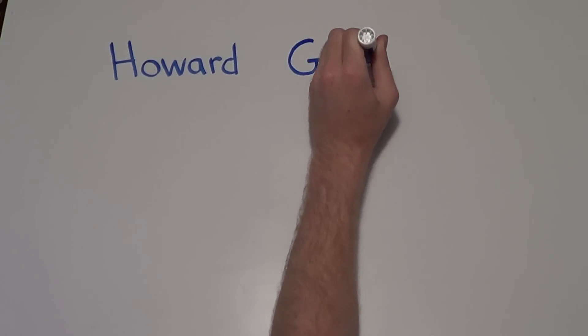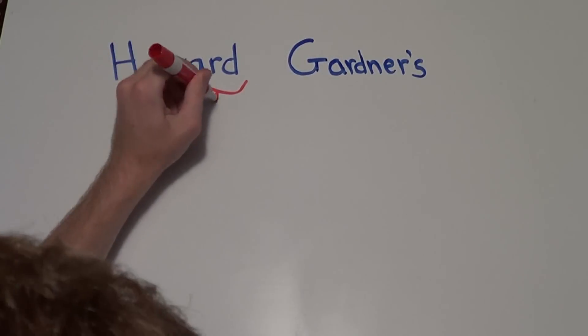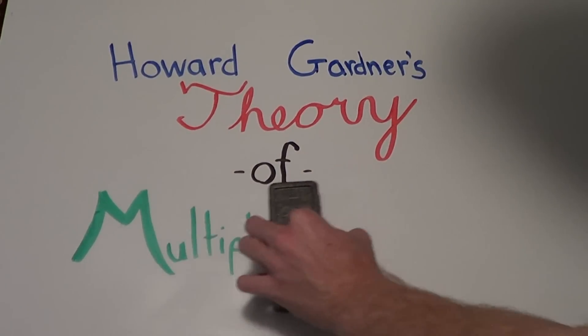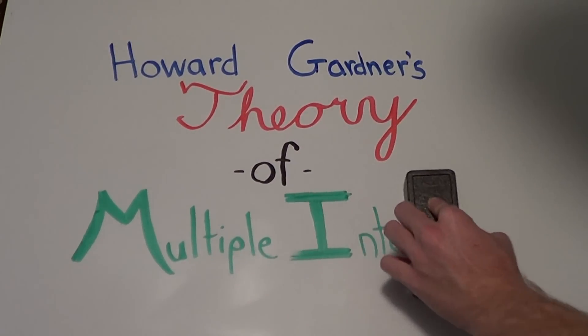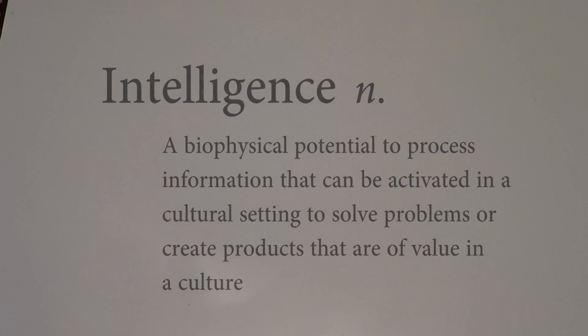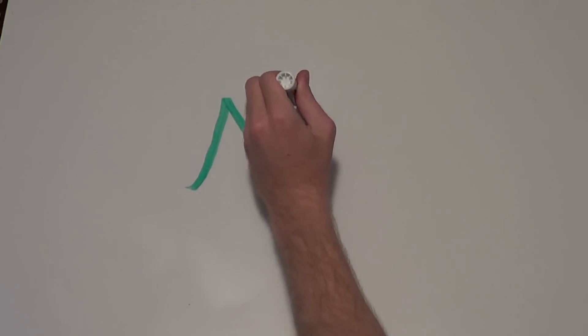American developmental psychologist and Harvard professor Howard Gardner takes a different approach to defining intelligence. In the mid-1980s, Gardner presented his revolutionary theory of multiple intelligences, saying that intelligence is a biophysical potential to process information that can be activated in a cultural setting to solve problems or create products that are of value in a culture.